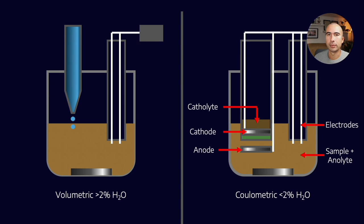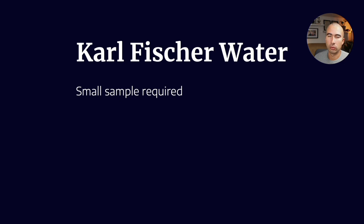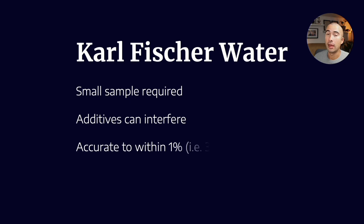Alright, so Karl Fischer water. First of all, only a small sample is required, so that's an advantage of this system. Additives can interfere with it though. We talked about a reaction of sulfur dioxide with water and iodine. Well, sometimes the additives can actually react inside that reaction, so that's where we get some inaccuracy.